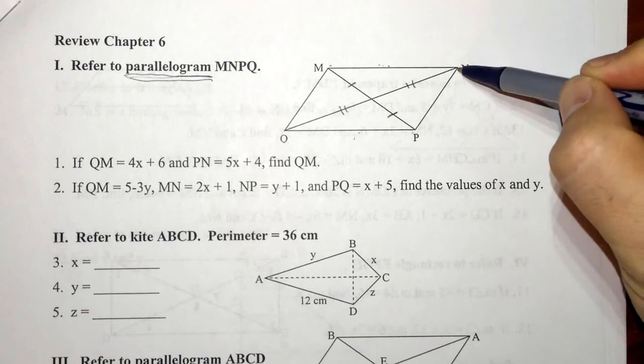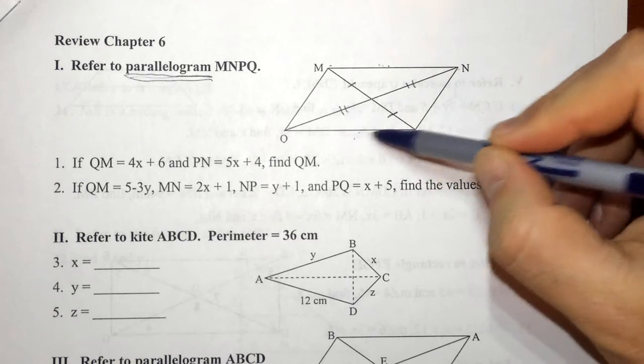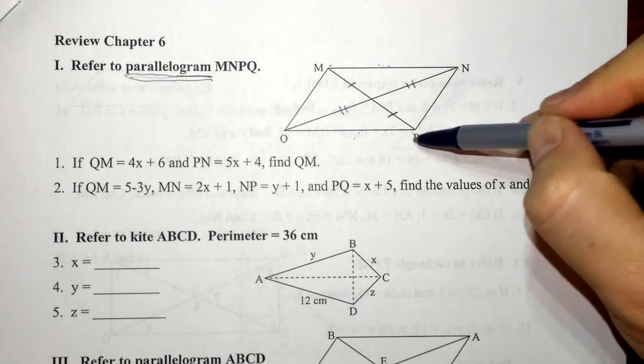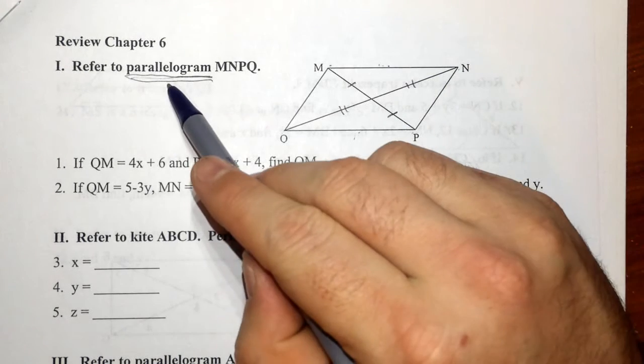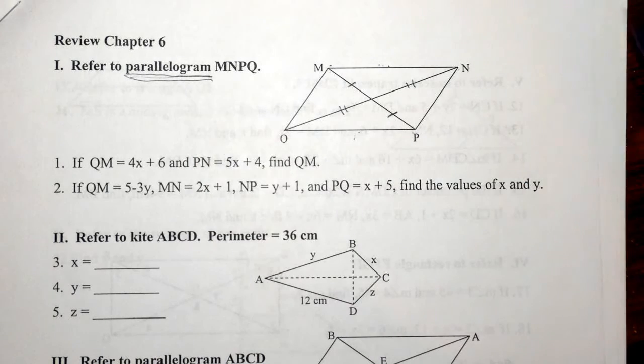And we also know that consecutive angles, so here QPN and PNM are supplementary, so they add to 180 degrees. That word parallelogram entails all of those in a single word. So let's use what we need.